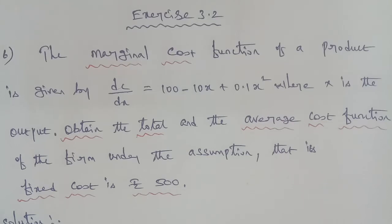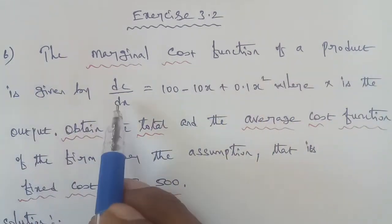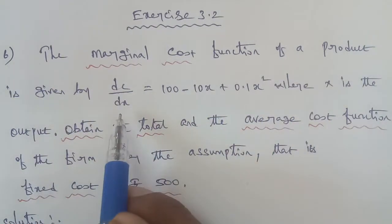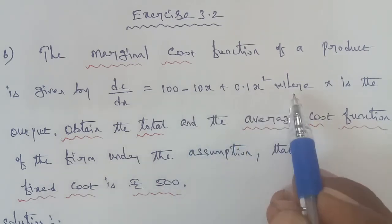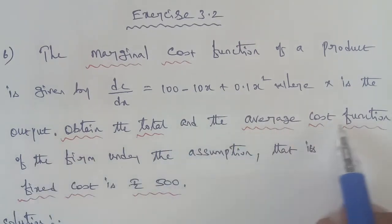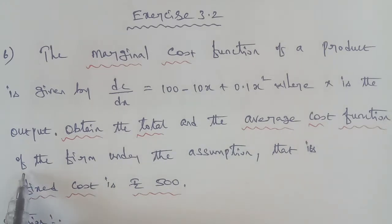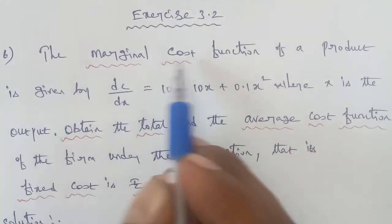Hi students. This is 12th business maths, chapter 3.2, question number 6. The marginal cost function of a product is given by dc/dx = 100 - 10x + 0.1x², where x is the output. Obtain the total cost and the average cost function of the firm, under the assumption that the fixed cost is Rs. 500.